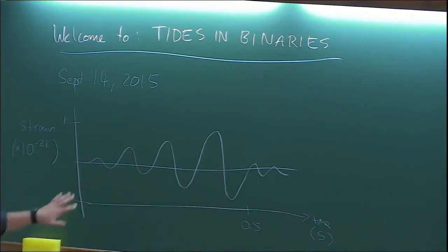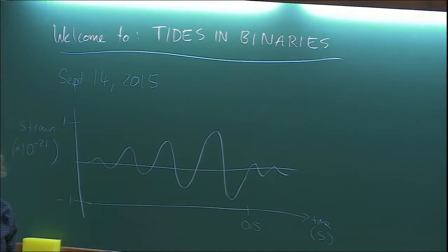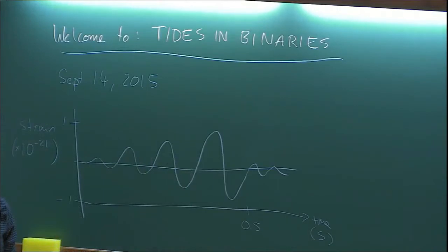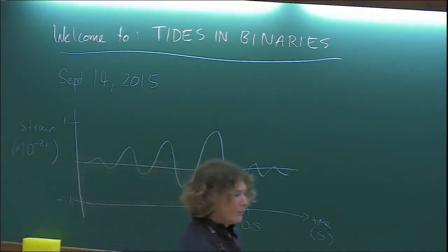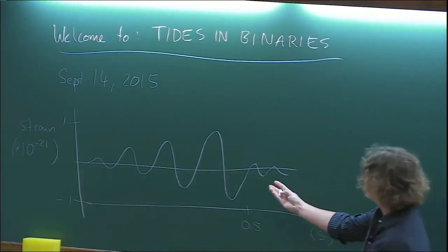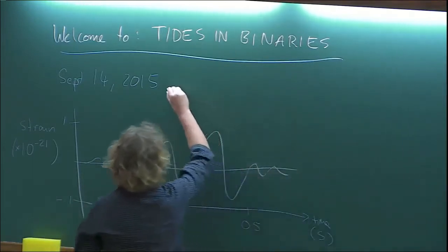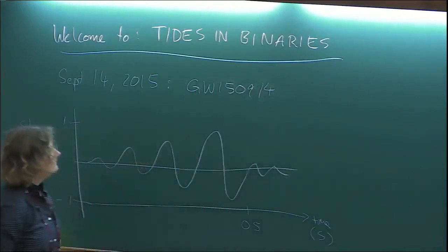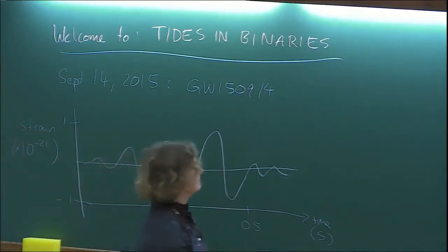The signal looked a bit noisy, but this is what came out of the detectors after doing some filtering and whitening of the data. It's basically like tuning a radio station — you turn the knob until you get a clear signal. This is what was done to get the signal that was seen. The question was: what does that kind of signal mean? This event was called GW150914, and it was the first detection of gravitational waves by ground-based detectors.